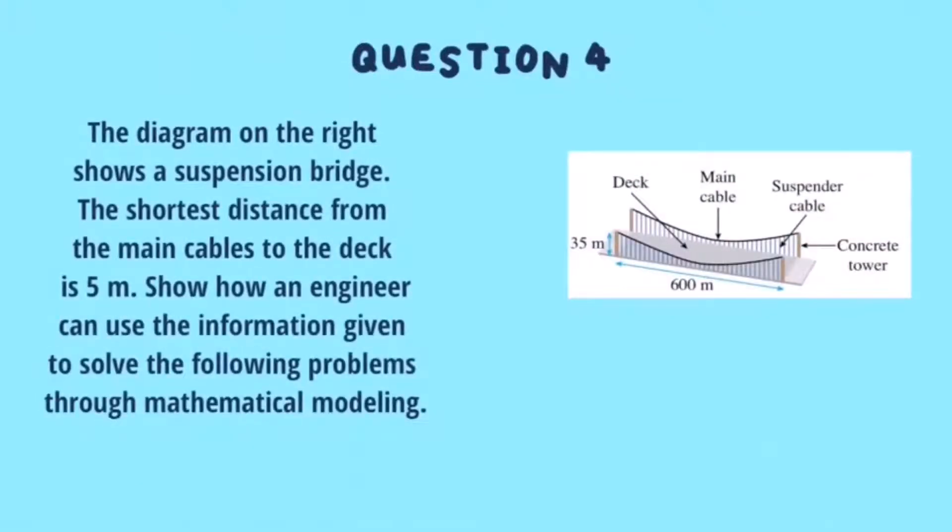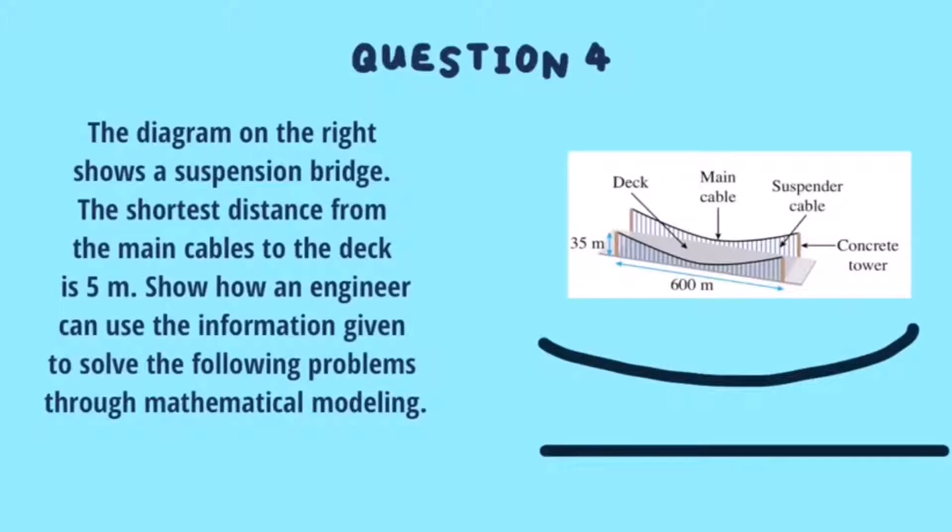The diagram on the right shows a suspension bridge. The shortest distance from the main cables to the deck is 5 meters. Show how an engineer can use the information given to solve the following problems through mathematical modeling.